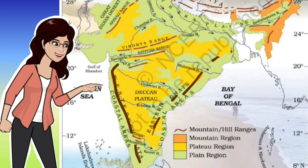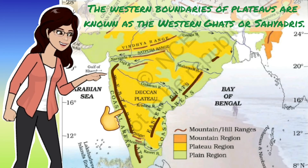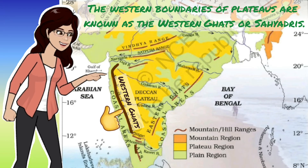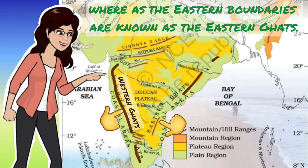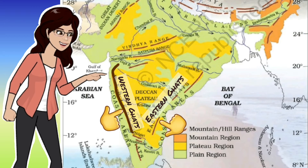Now, the most important landforms you need to locate are the two Ghats — this is where most children make mistakes. You must be wondering what Ghats are. They are the edges of plateaus. The western boundaries of plateaus are known as the Western Ghats or Sahyadris, whereas the eastern boundaries are known as the Eastern Ghats. The Western Ghats are almost continuous, whereas the Eastern Ghats are broken and uneven.